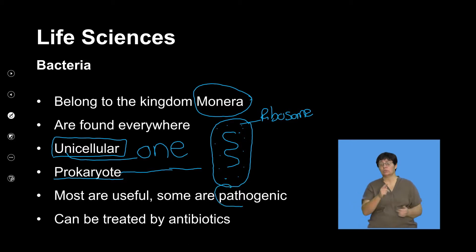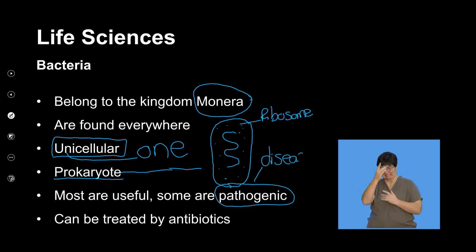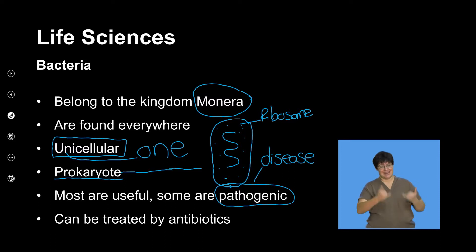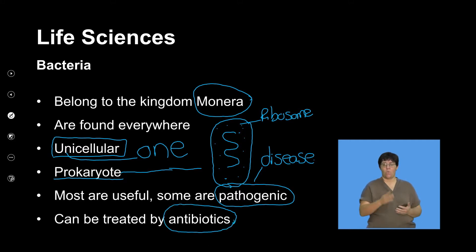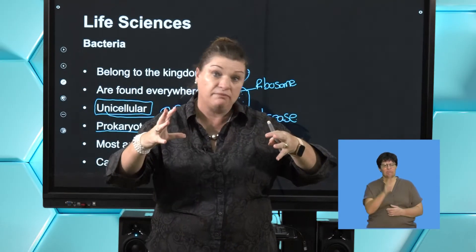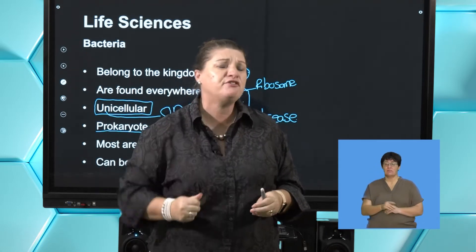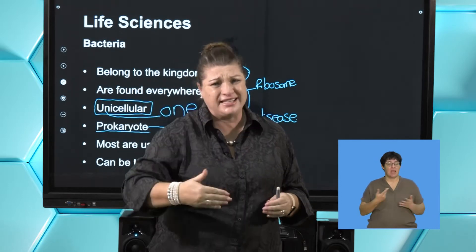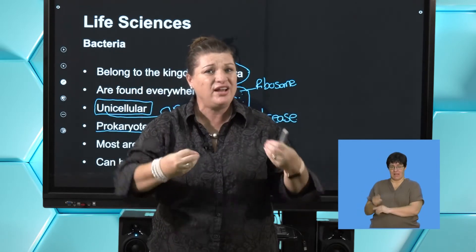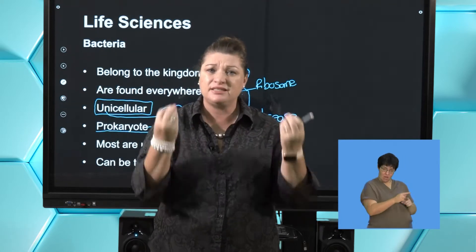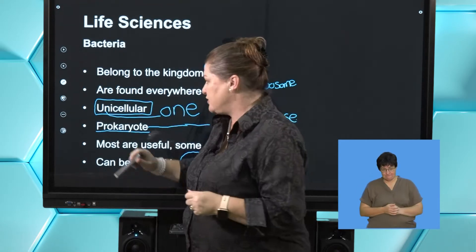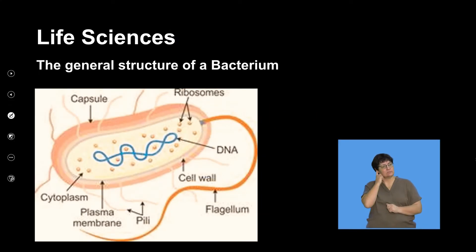When we come to bacteria, most are useful, but remember the term pathogenic — they're going to produce disease. Very importantly, bacteria can be killed by antibiotics. When we looked at viruses in the previous lesson, viruses couldn't be killed — we use vaccines to build antibodies. But a bacterium is a living cell, and we have medicines called antibiotics that can kill them. So let's have a look at what a bacterium cell looks like.